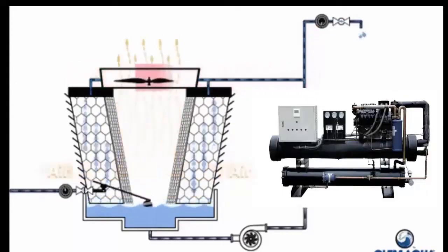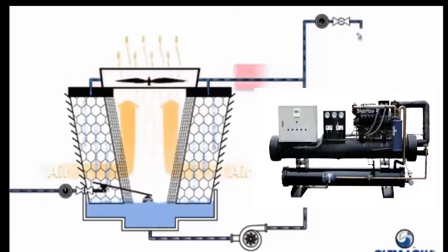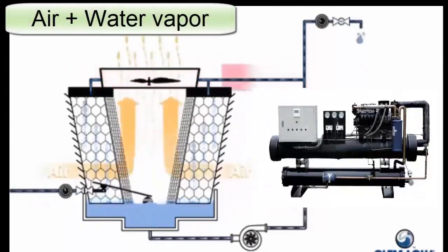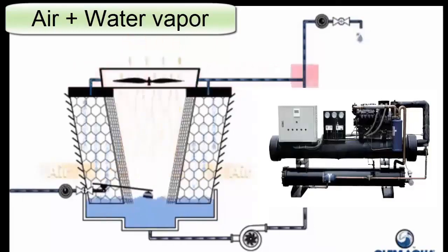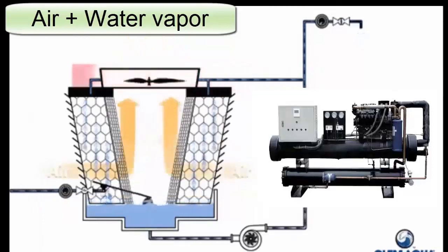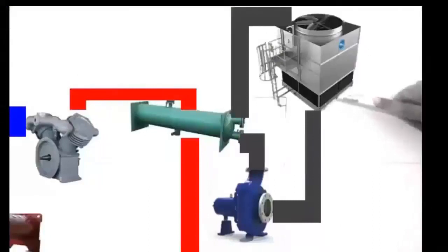However, we cannot use this type of system in all situations because we need an additional source of water from the environment. The issue with the cooling tower is that a quantity of water evaporates as a result of the cooling process in the cooling tower, and we have to be constantly replacing it.